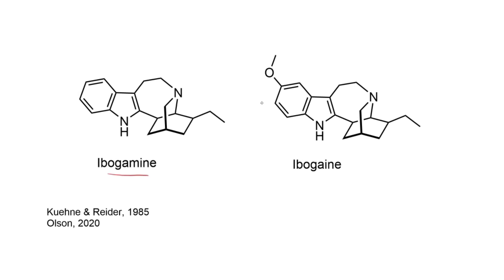Ibogamine was first synthesized in 1965, and since then it has continued to draw interest from the chemical synthesis community, and a number of other syntheses have been reported. I've picked a synthesis from 1985 to highlight here from Kuhna and Ryder, because I think it's interesting for a couple of different reasons.